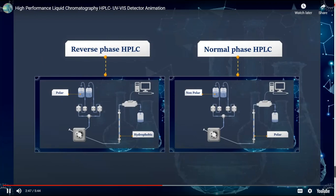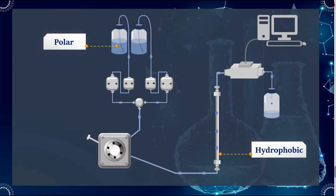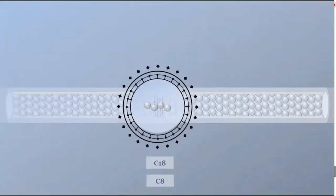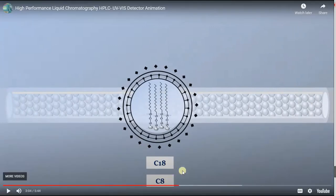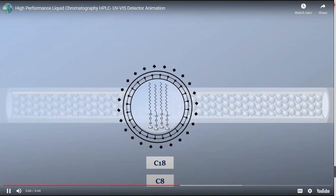There are two main types of HPLC — reverse phase and normal phase. Reversed phase has a non-polar stationary phase and a moderately polar mobile phase. A common stationary phase is silica modified by attaching a straight-chain alkyl group to its surface — either C8 or C18. C18 has more carbons and is more hydrophobic than C8; the long carbon chains do not interact with water because there are no ionic charges.